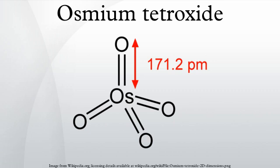Oxidation of alkenes: Alkenes add to OsO4 to give diolate species that hydrolyze to syn-diols. The net process is called dihydroxylation. This proceeds via a 3+2 cycloaddition reaction between OsO4 and the alkene to form an intermediate osmate ester, which rapidly hydrolyzes to yield the vicinal diol. As the oxygen atoms are added in a concerted step, the resulting stereochemistry is syn.